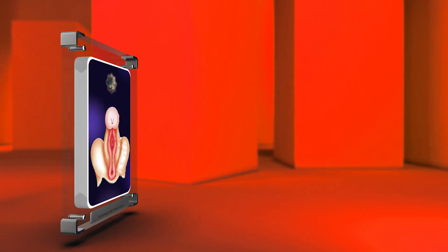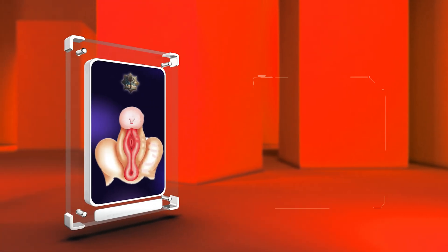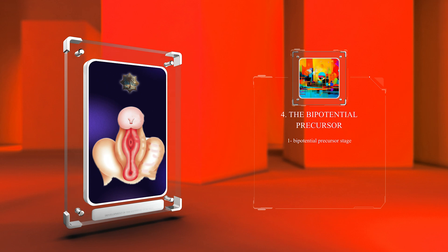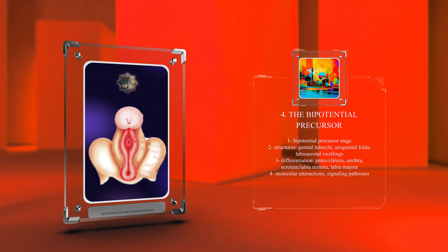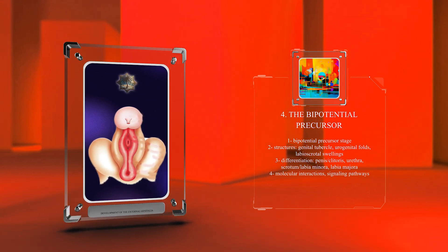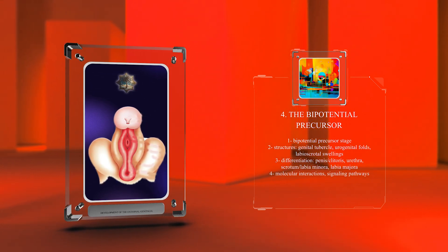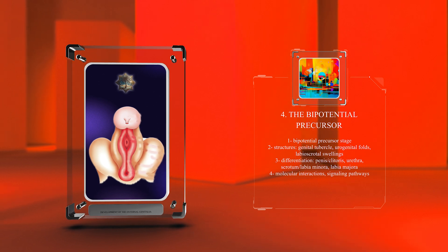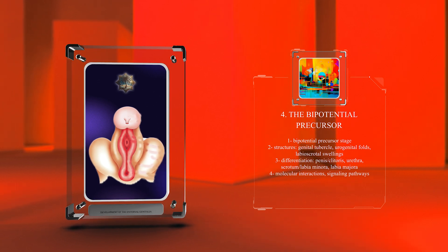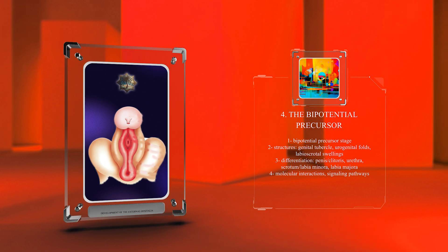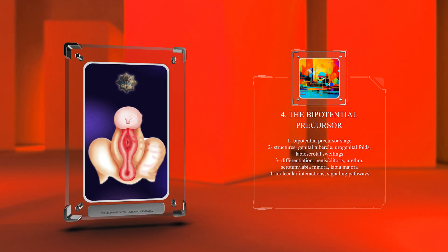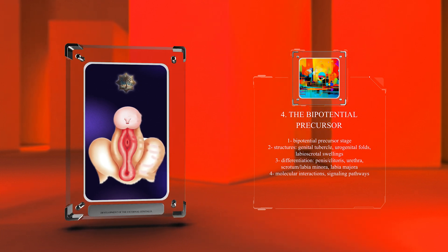During the bipotential precursor stage, important structures like the genital tubercle, urogenital folds, and labioscrotal swellings form. These structures will differentiate into the penis or clitoris, urethra, scrotum or labia minora, and labia majora, guided by molecular interactions and signaling pathways.